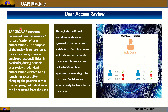The final module of SAP GRC is the User Access Review (UAR). The UAR module supports periodic reviews and recertification of user authorizations. The purpose is to harmonize user access in systems with employee responsibilities — for example, removing redundant authorizations after a position change within the company. Through dedicated workflow mechanisms, the system distributes requests with information about users and their authorizations. Reviewers can approve or remove roles from users, and decisions are automatically implemented in the systems.